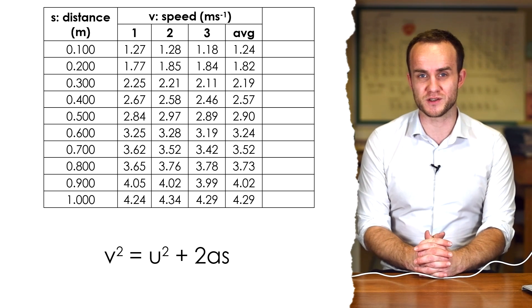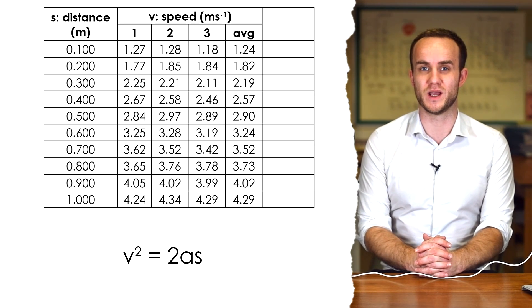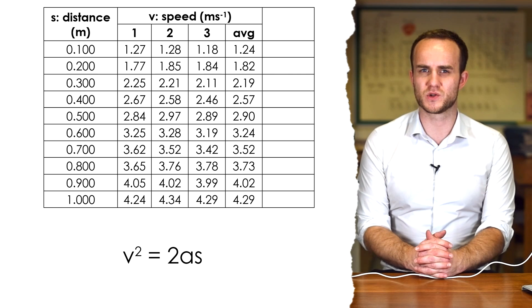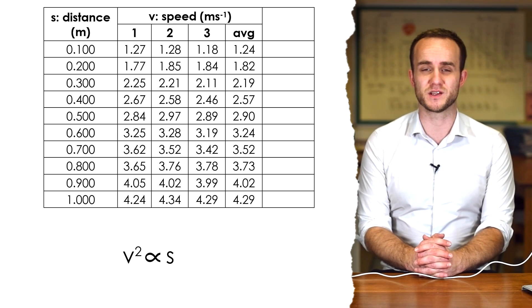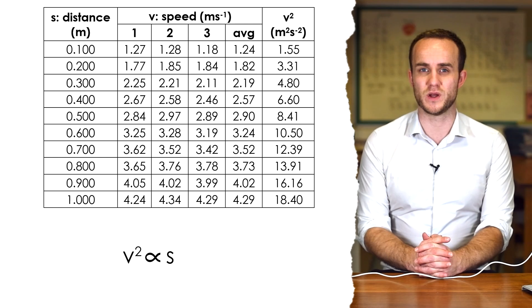So that goes to show that we can't draw a graph of V against S because they're not proportional - it's V² that's proportional to S. So we must square all of our average speeds to find V², and here they are.